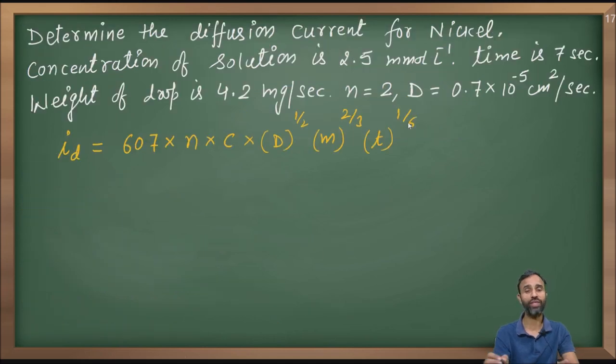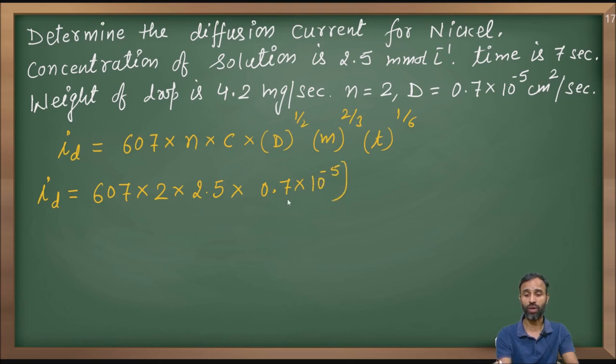Let us solve it. Just put the values. Id, the diffusion current, comes out to be in micro ampere. So, 607 into N, which is 2. Concentration is given in millimole per litre, that is 2.5 into diffusion coefficient 0.7 into 10 raised to power minus 5 centimeter square per second, that is the unit required for the equation.